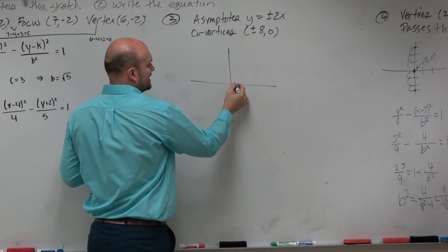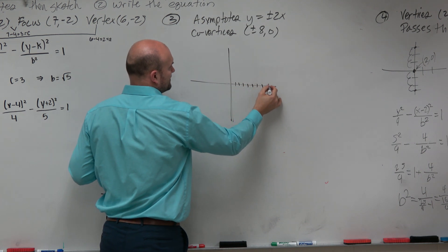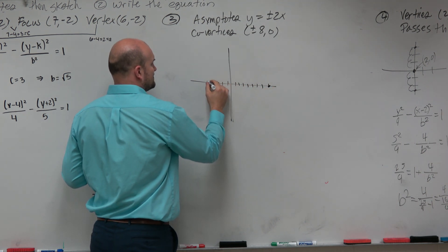So up here I have plus negative 8, 1, 2, 3, 4, 5, 6, 7, 8, and 1, 2, 3, 4, 5, 6, 7, 8.